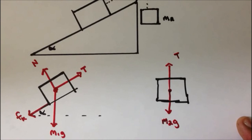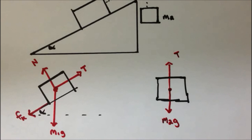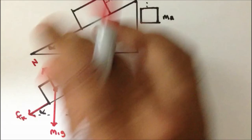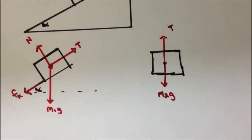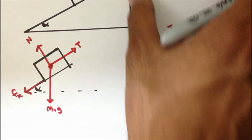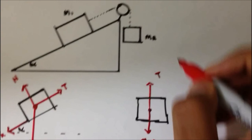The next step is to choose a coordinate system — what we call up, down, left, and right, or the positive x and positive y directions. I'm going to choose everything that's moving clockwise as positive and counterclockwise as negative. Since this is accelerating downward because the system is moving clockwise, I will call the direction of acceleration positive.